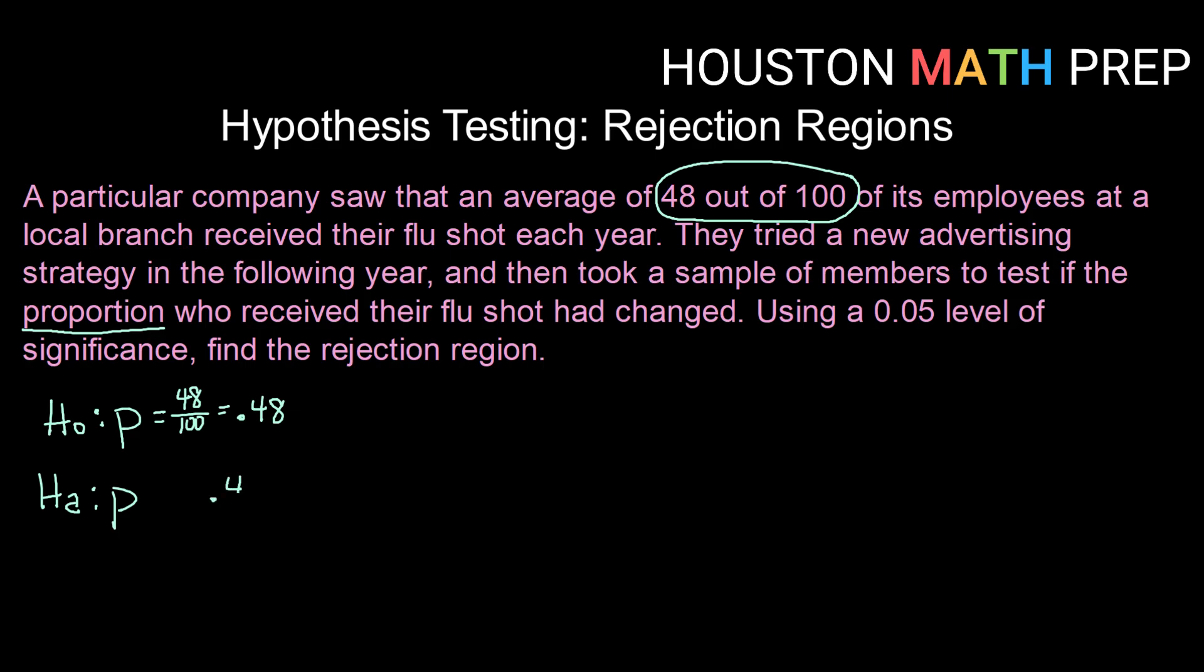For our alternative hypothesis, we're going to compare p to 0.48. And in this case, they're just interested in whether or not the proportion had changed. Notice here it doesn't say increased or decreased, just says had changed. So we're interested in seeing if p is anything different than or not equal to 0.48.